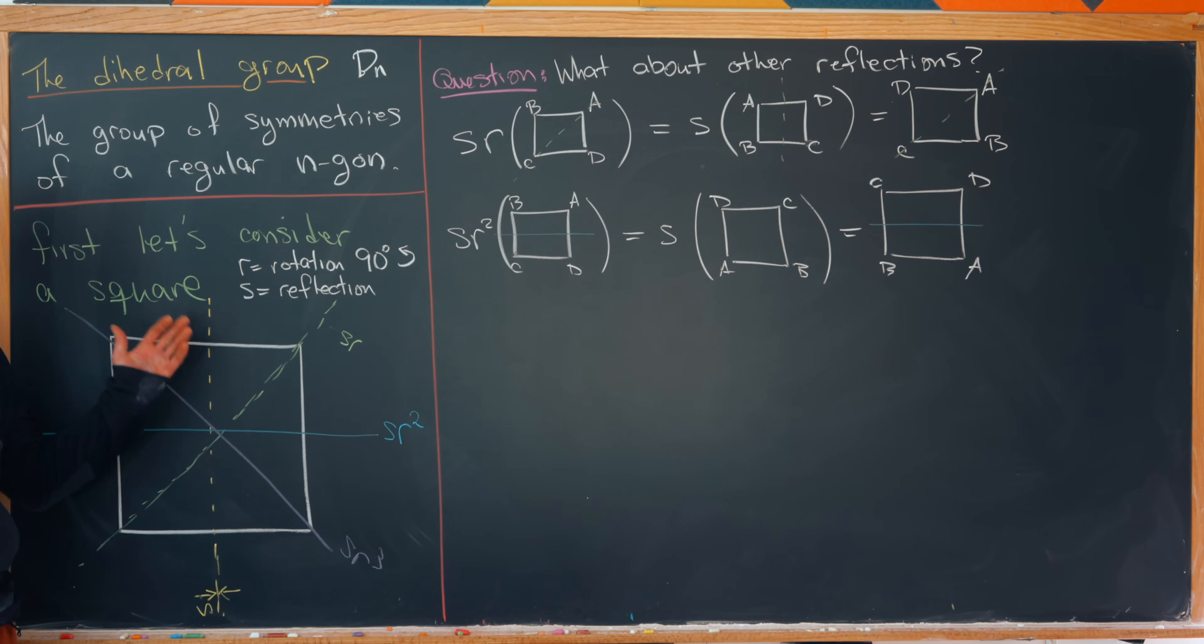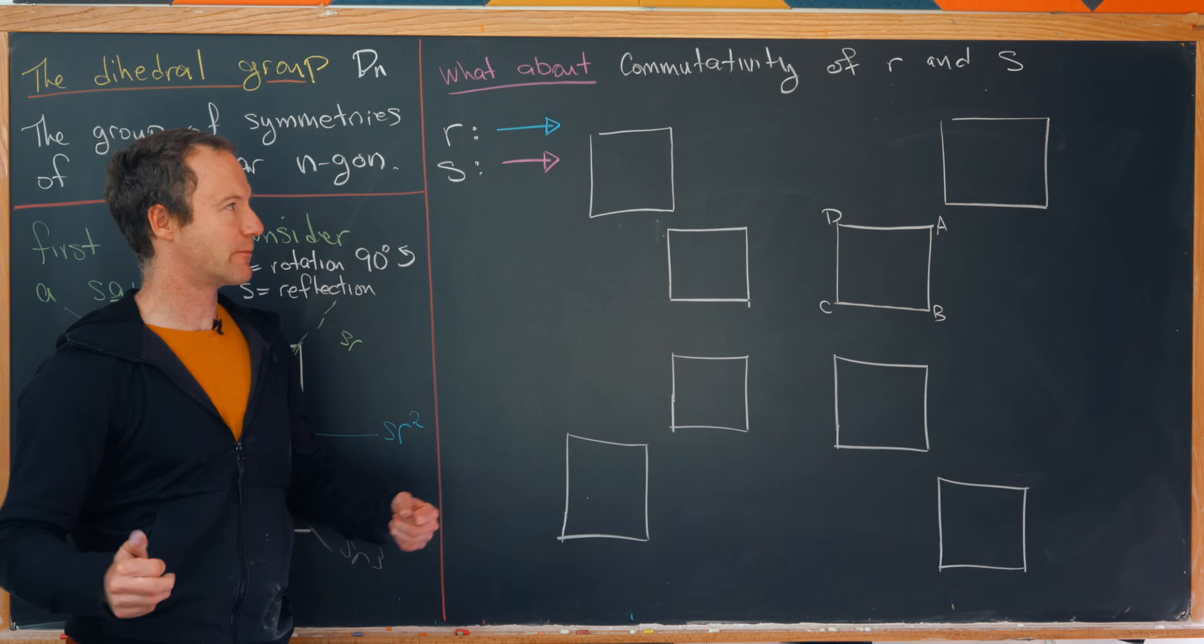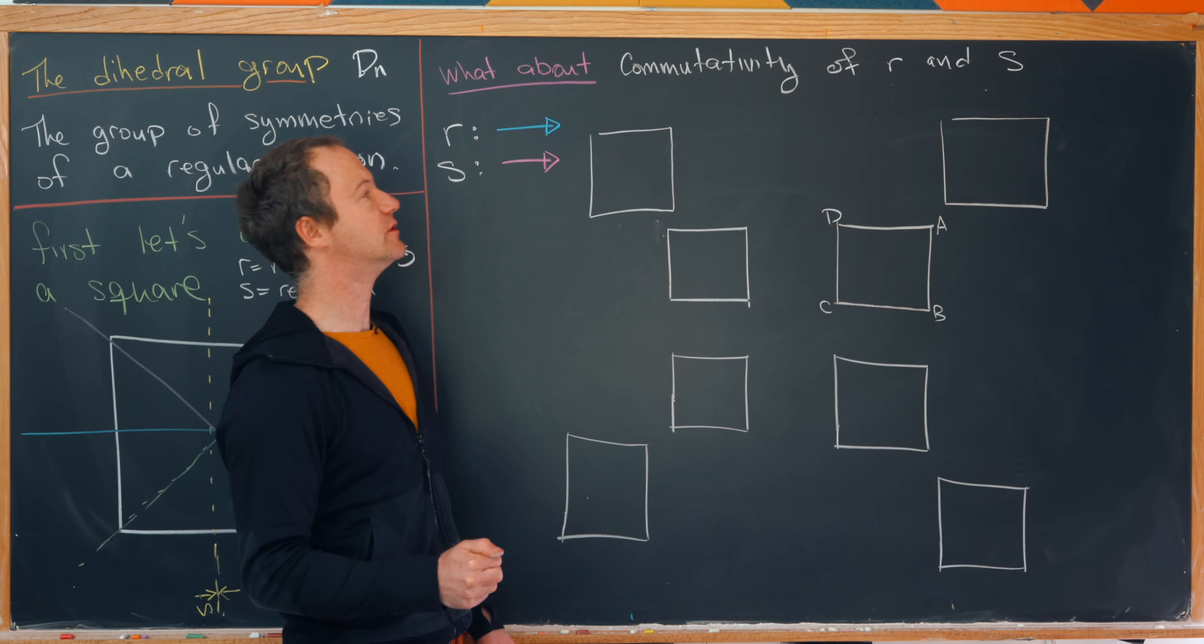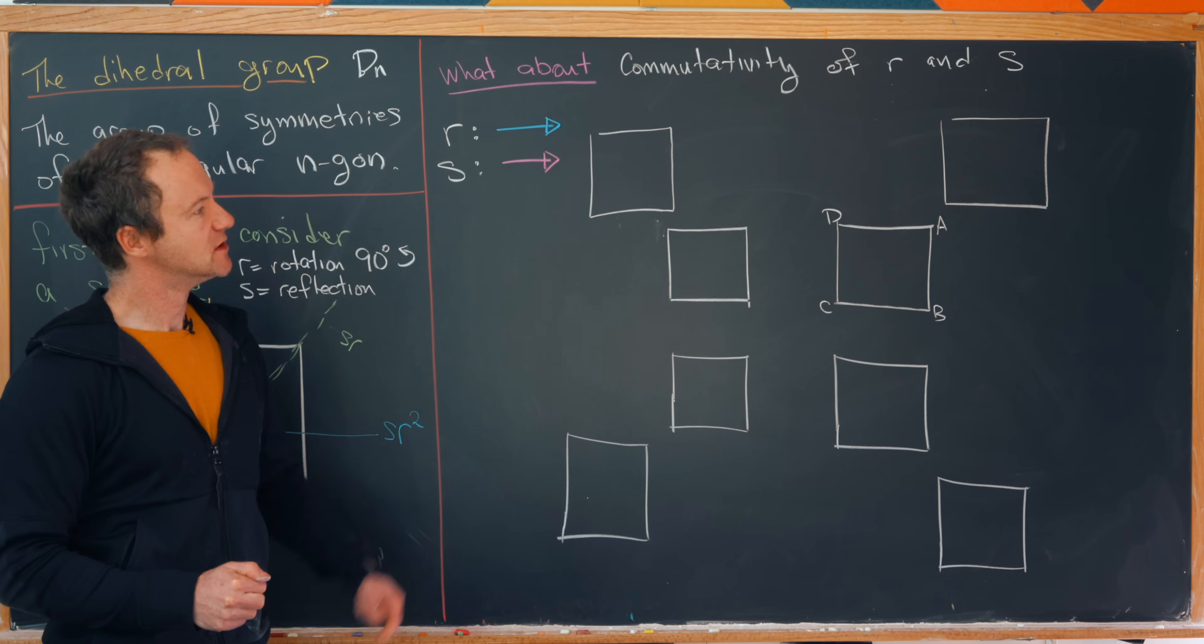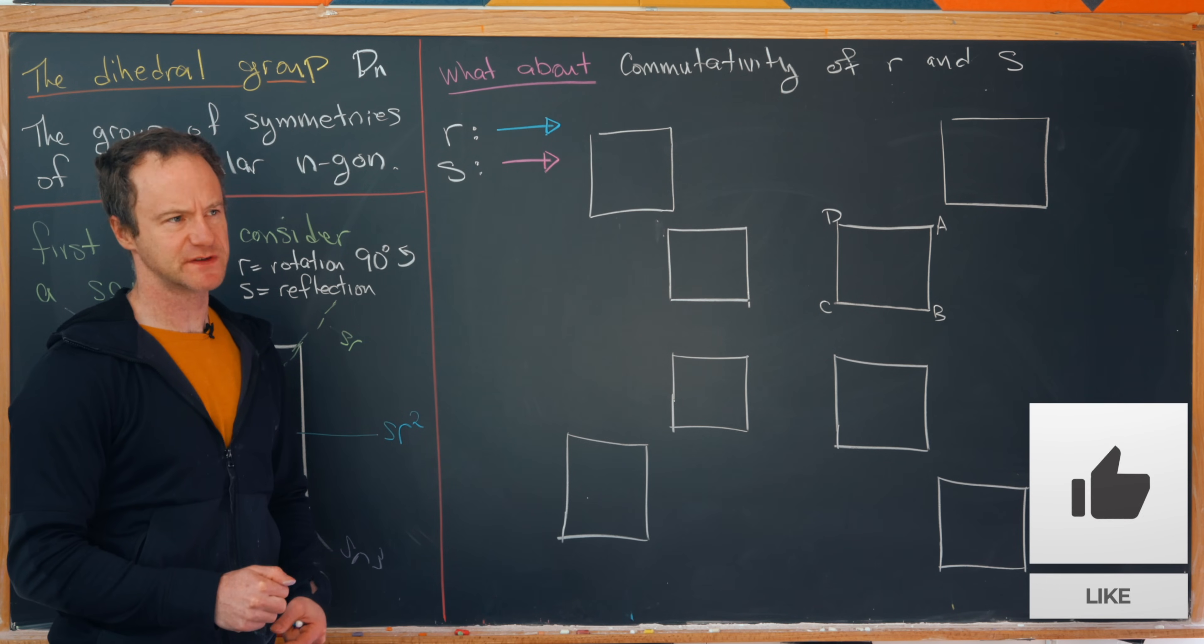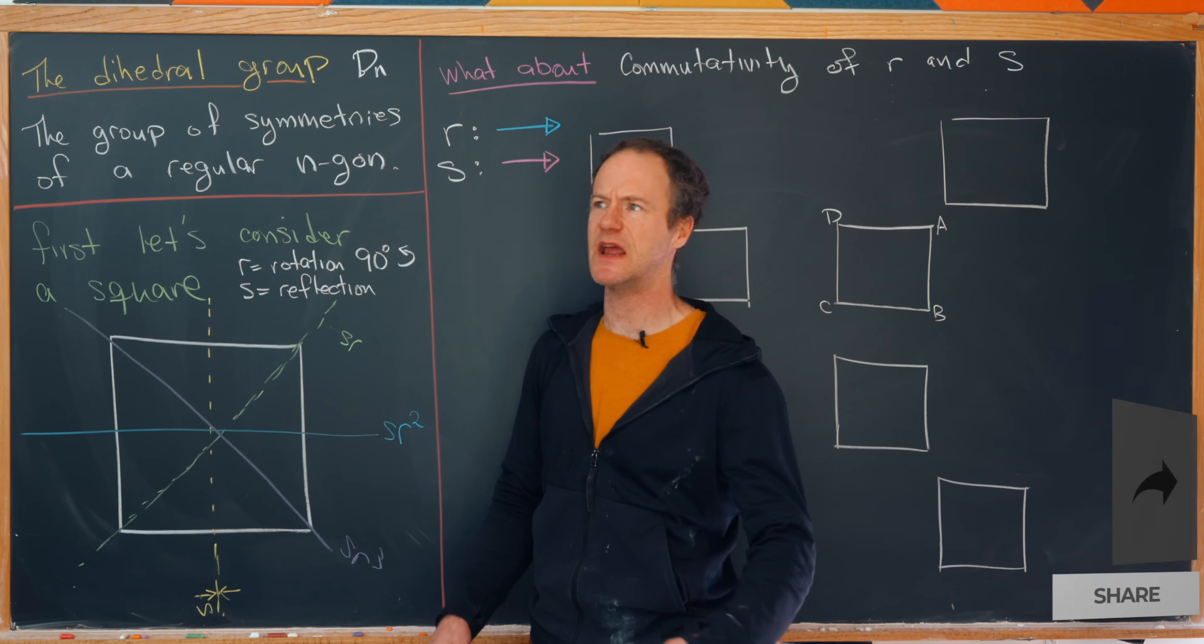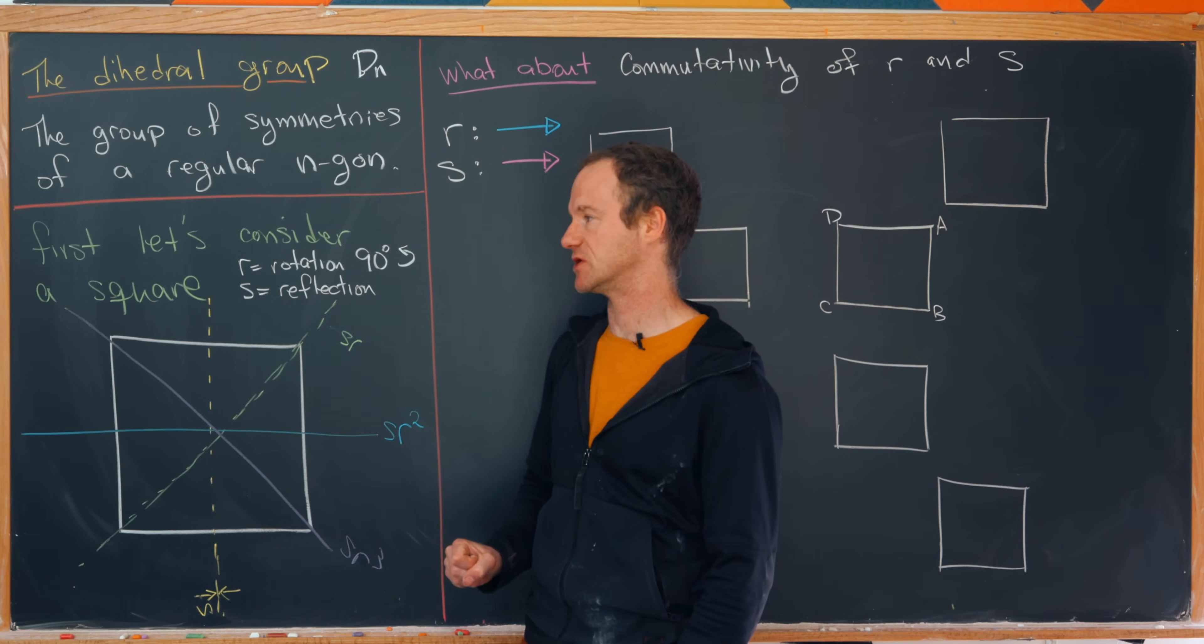But the real question now is what's the commutativity relations between r and s? Do they commute? Well, let's do a nice visual representation to decide what those commutativity relations are. I've got this nice map which is going to help us figure out the commutativity of r with s. So let's notice we've got eight squares here. And these eight squares represent all of the eight different symmetries that we can do to this square, or eight different rigid motions that leave the square unchanged, other than the name of the vertices of course.